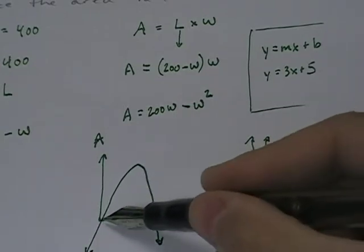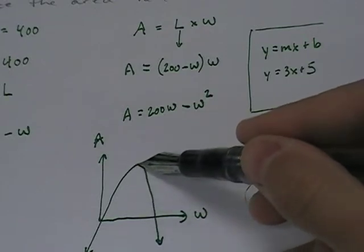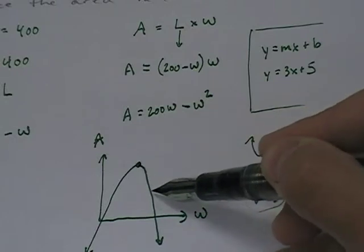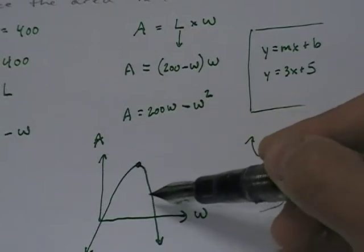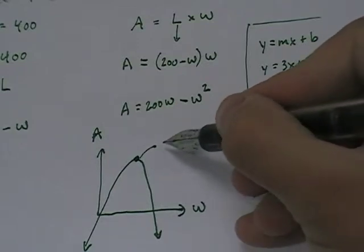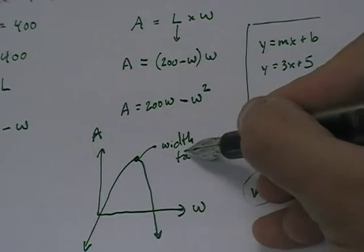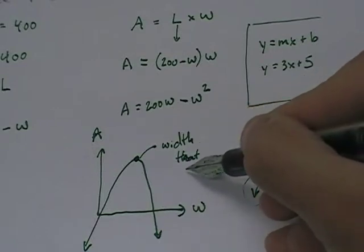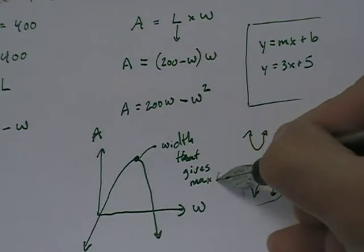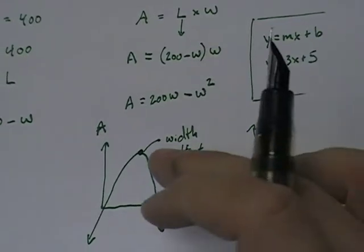As the width increases, the area also increases up to a maximum. And then as the width continues to increase, the area will now decrease. So we're looking for the width that maximizes area. We're looking at the width that gives the maximum area. We're looking for this point.